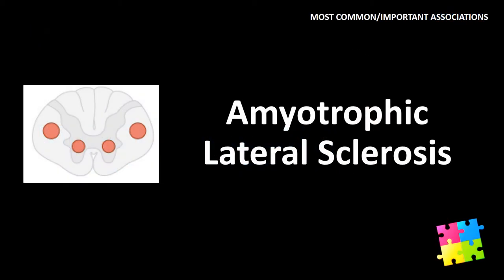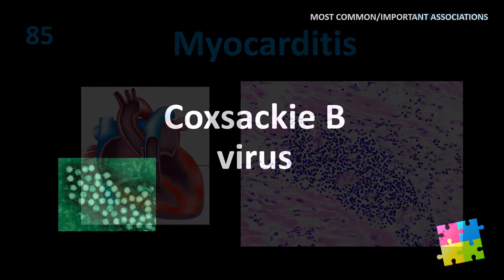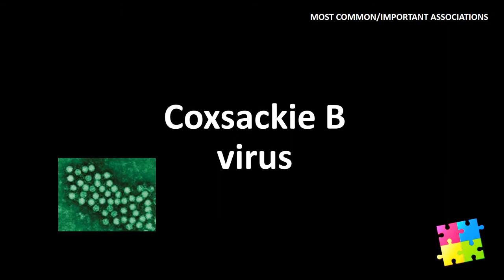Item 84 (continued): ALS — amyotrophic lateral sclerosis. Item 85: Myocarditis — Coxsackie B virus.